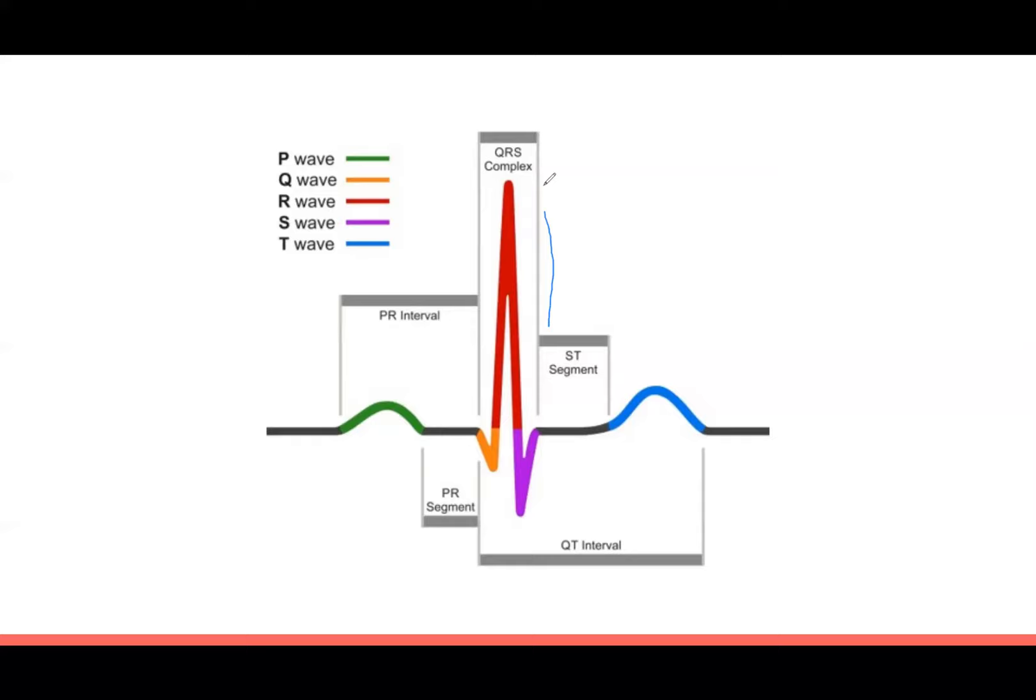Overall, the QRS complex takes the three waves, as we discussed, the Q, R, and S, and is usually looked at as a whole. The complex represents ventricular depolarization, which drives the contraction of the ventricles. This is really important to understand because the contraction of the ventricles is arguably the most important part of the cardiac cycle. This is what pushes the blood to the rest of the body. Well, because that's the function of the heart. I can see how that's important.